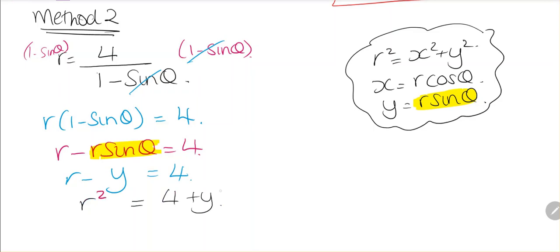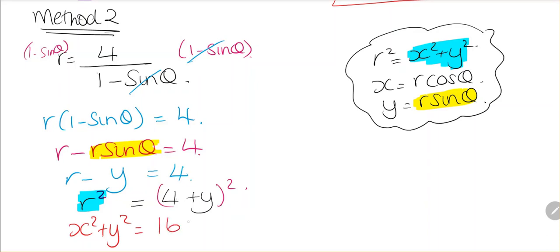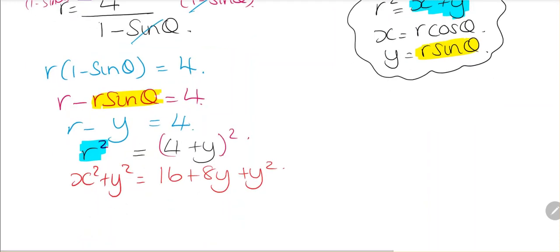Now we can square both sides. r squared equals (4 plus y) squared. We know r squared equals x squared plus y squared, so substituting gives x squared plus y squared equals 16 plus 8y plus y squared. The y squared terms cancel, and we have x squared equals 8y plus 16.